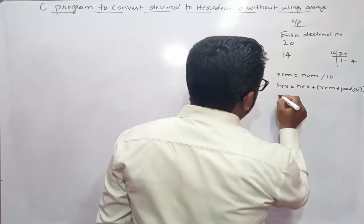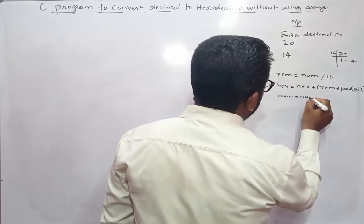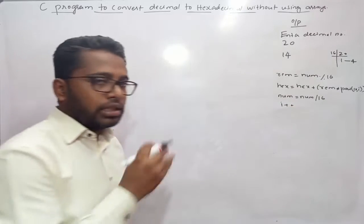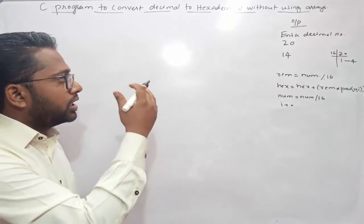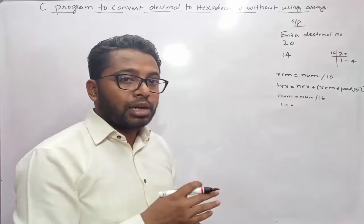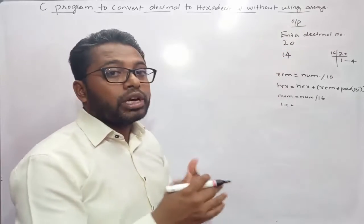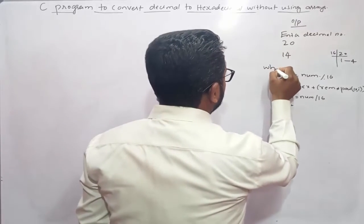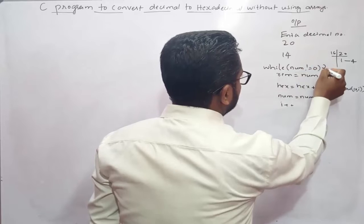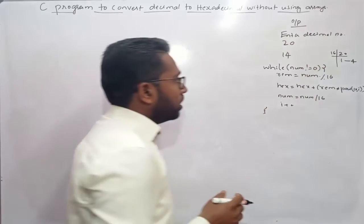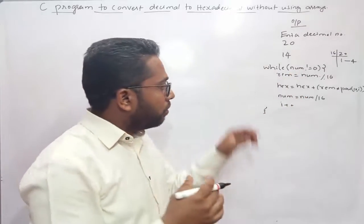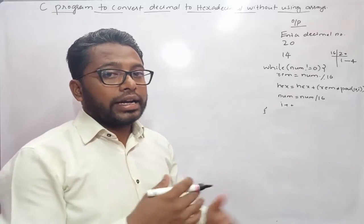Next, num equals num by 16, then i plus plus. These are the four steps we need to perform to convert decimal to hexadecimal. How long do we perform these steps? Until the value 20 becomes 0. So we use while num is not equal to 0. Until the value stored inside num becomes 0, we need to perform these four tasks again and again.